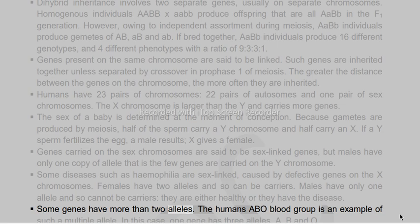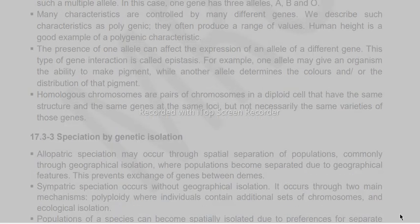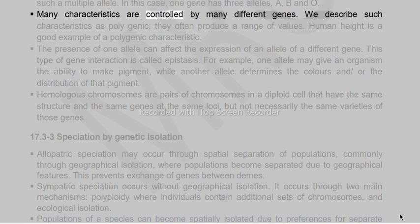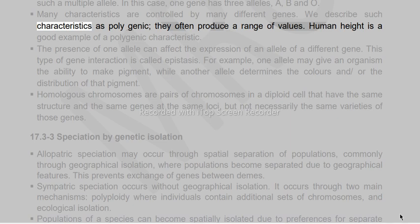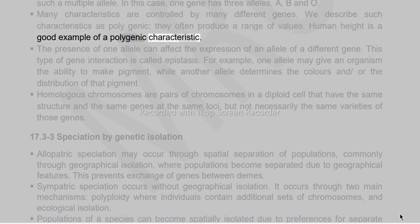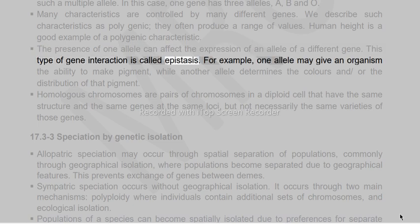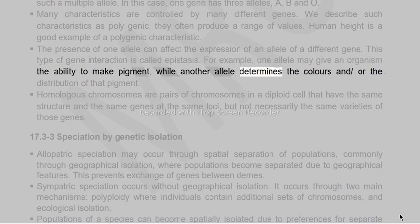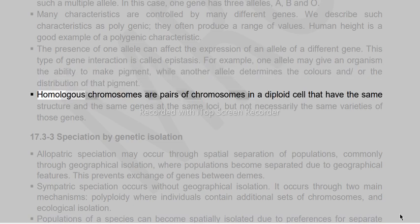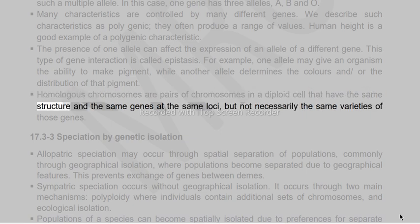Some genes have more than two alleles — the human ABO blood group is an example of multiple alleles, with one gene having three alleles: A, B, and O. Many characteristics controlled by many different genes are described as polygenic, often producing a range of values. Human height is a good example. The presence of one allele can affect the expression of an allele of a different gene — this type of gene interaction is called epistasis. Homologous chromosomes are pairs of chromosomes in a diploid cell that have the same structure and genes at the same loci, but not necessarily the same varieties of those genes.